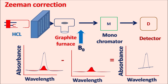So that is about the Zeeman effect. The Zeeman effect is the splitting of spectral lines under an applied magnetic field, which is useful in NMR spectroscopy, atomic spectroscopy, and even electron spin resonance. Hope you enjoyed this video. Please subscribe to our channel, share this video with your friends, and post your comments in the comment box. Thank you for watching.